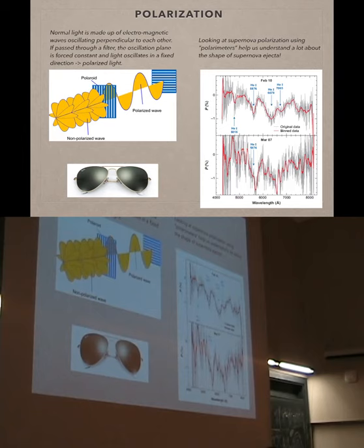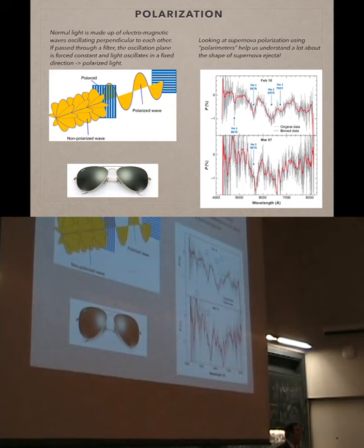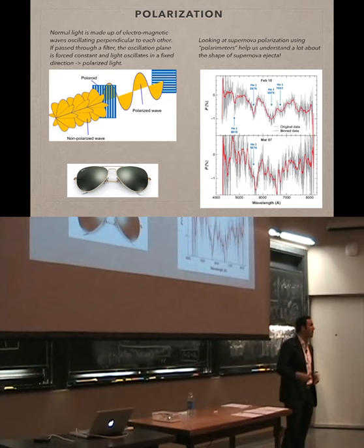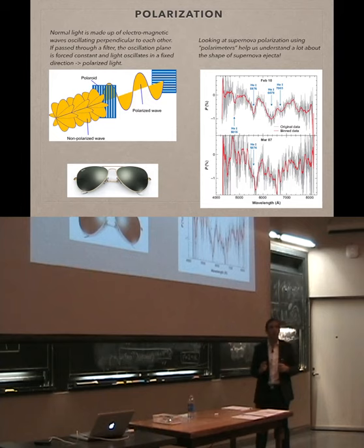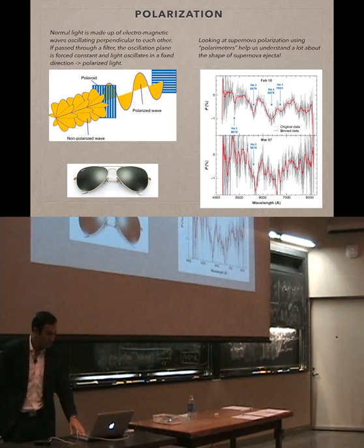When we do this for supernovae, we see that Type Ia supernovae tend to have a more spherical shape, whereas Type II supernova explosions tend to have a more elongated, complex geometry. Even for supernovae that are far away and we can't see their structure directly — just a bright glow going up and down — if we measure the polarization, we can infer their shape. Type I supernovae appear more spherical, while Type II seems to have a more complex, elongated geometry. This is why polarization is important.